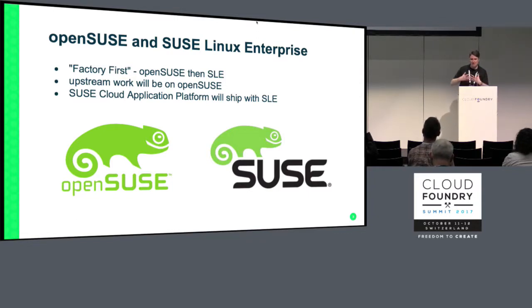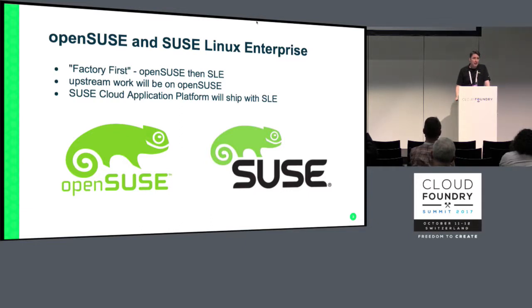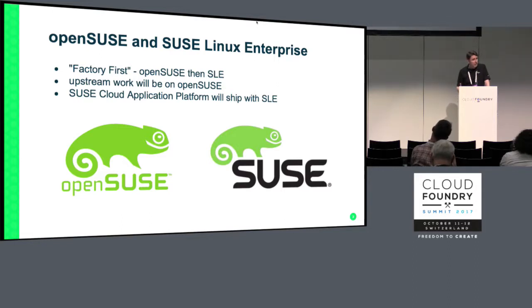OpenSUSE Tumbleweed feeds into both SUSE Linux Enterprise and OpenSUSE Leap. Our upstream work is going to happen and is happening. We've got a pair working on this now, getting stem cells and stacks committed upstream so that anyone can use this. Our upstream work will be built on OpenSUSE, and our productized work will be shipping on SUSE Linux Enterprise — same code, with a process by which we can support SUSE Linux Enterprise much more deeply.